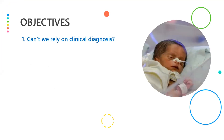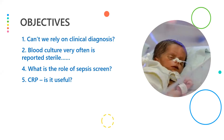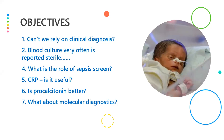Can't I rely on clinical diagnosis alone? Do I need specific diagnostic methods? We send blood cultures but they are often reported sterile. What do we do in such a scenario? How can we rely on a sepsis screen? Do we need to send them for all cases of neonatal sepsis? Is CRP useful?